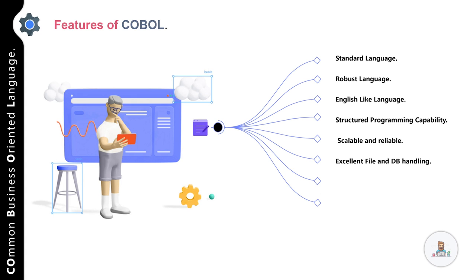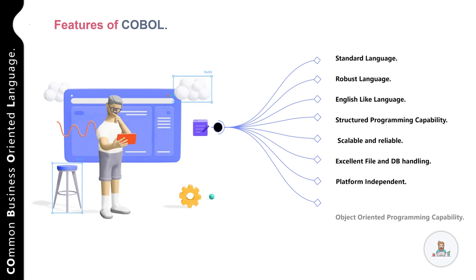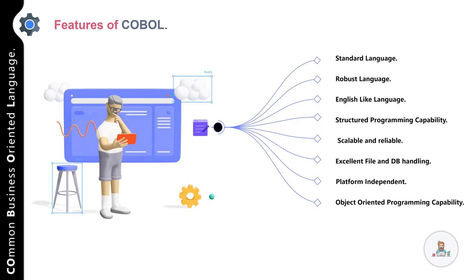COBOL is scalable and reliable with excellent file and database handling capabilities. It can handle huge volumes of transactions, which is why COBOL still handles more than 70 percent of world business transactions. COBOL is suitable for everything from simple batch reporting to complex banking transactions. It is platform independent, supports object-oriented programming, and for applications written in COBOL, the cloud offers another platform for rapid deployment and modernization because COBOL is both adaptive and highly portable.